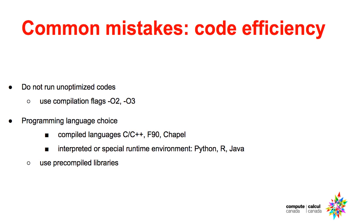Please be aware that not all programming languages are equal in terms of performance. Python has been getting popular in recent years as a fantastic scripting language. Know that its native arithmetic and loops are a factor of 80 to 200 times slower compared to a compiled language. So if you are doing a lot of coding in Python and most CPU time is spent inside native Python code as opposed to pre-compiled libraries such as NumPy or SciPy, you might get much better performance by rewriting the most demanding parts in a compiled language.